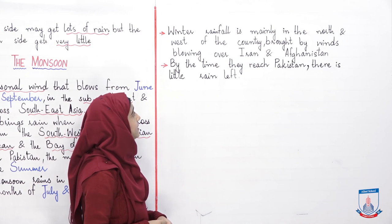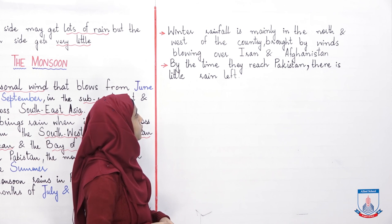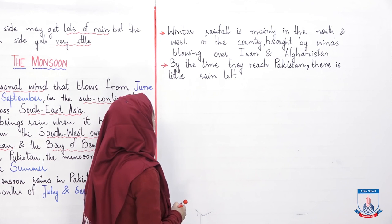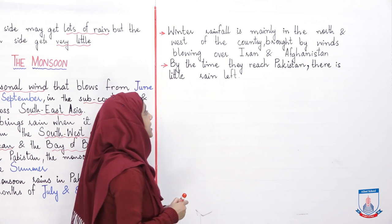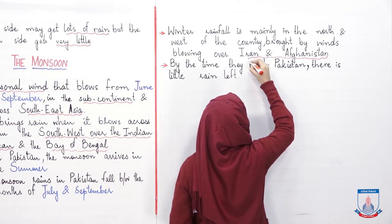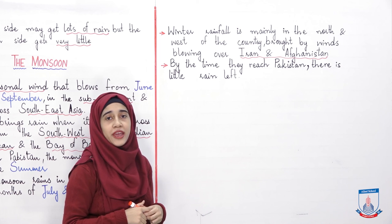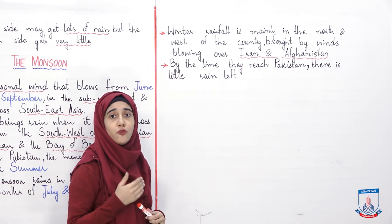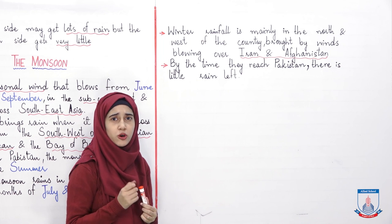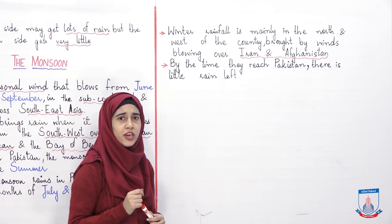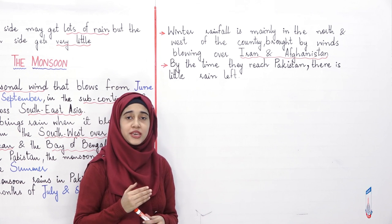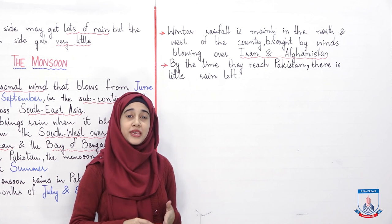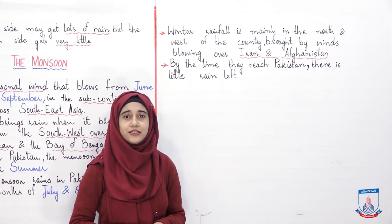Winter rainfall is mainly in the north and west of the country, brought by winds blowing over Iran and Afghanistan. جب تک وہ ہوائیں پاکستان پہنچتی ہیں تب تک ان کا زور کافی حد تک ٹوٹ چکا ہوتا ہے اور اتنی زیادہ بارشیں نہیں ہوتیں. تو بچو، یہاں پر ہمارا آج کا lecture ختم ہوتا ہے — اپنا بہت خیال رکھیں، اللہ حافظ.